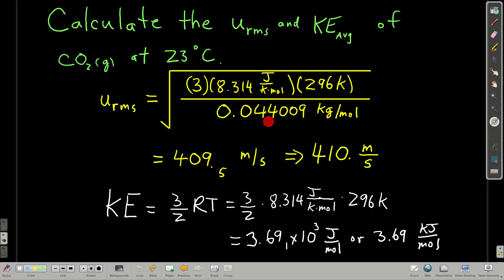And this is the molar mass of carbon dioxide in kilograms per mole. In grams per mole, it's 44.009, but we divide it by 1,000 to get kilograms per mole. And we get about 410 meters per second. Now, to get the average kinetic energy, we just do 3 halves RT, 3 halves R times T. And we get 3.69 times 10 to the third joules per mole. That's how these units work out. If we wanted to convert it to kilojoules, we would just divide it by 1,000. And we get 3.69 kilojoules per mole.